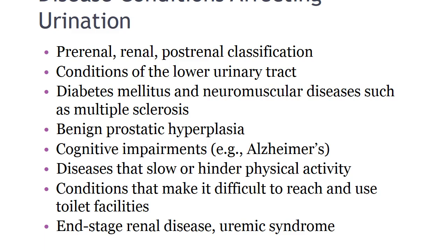Diabetes and neuromuscular diseases such as multiple sclerosis can cause changes in nerve function leading to possible loss of bladder tone, reduced sensation of bladder fullness, or an inability to inhibit bladder contractions. Older men often suffer from benign prostatic hyperplasia, making them prone to urinary retention and incontinence. Patients with cognitive impairments such as Alzheimer's disease may lose the ability to sense a full bladder or recall the procedure for voiding. Diseases that slow physical activity — such as degenerative joint disease and Parkinson's — make it difficult to reach and use toilet facilities.